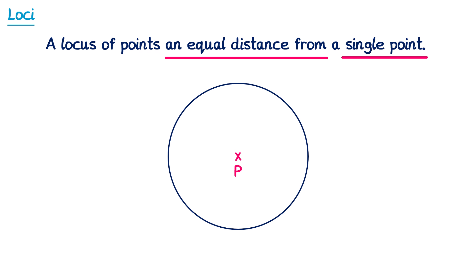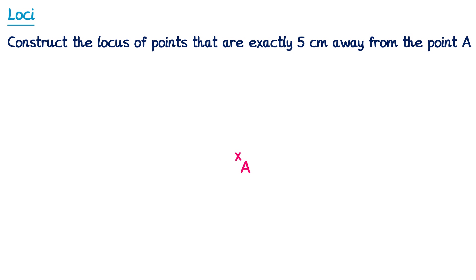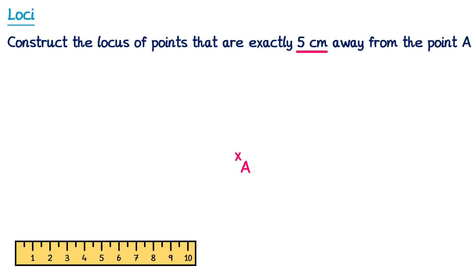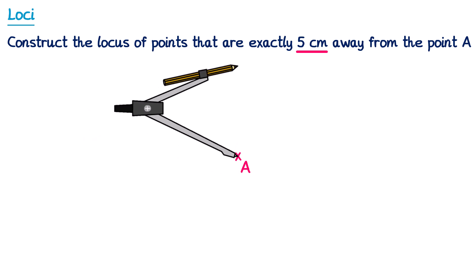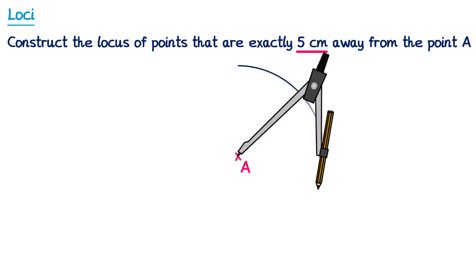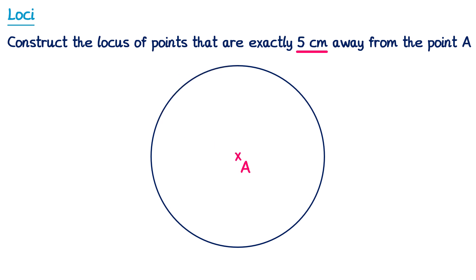All of the points that are 4cm away from point P form a circle. So the locus of points that are an equal distance from a single point is just a circle. For an exam question, it could say: construct the locus of points that are exactly 5cm away from the point A. We take a pair of compasses, set the width to 5cm, place it on A, and draw a circle. This circle has a radius of 5cm, meaning every point on it is exactly 5cm away from point A.